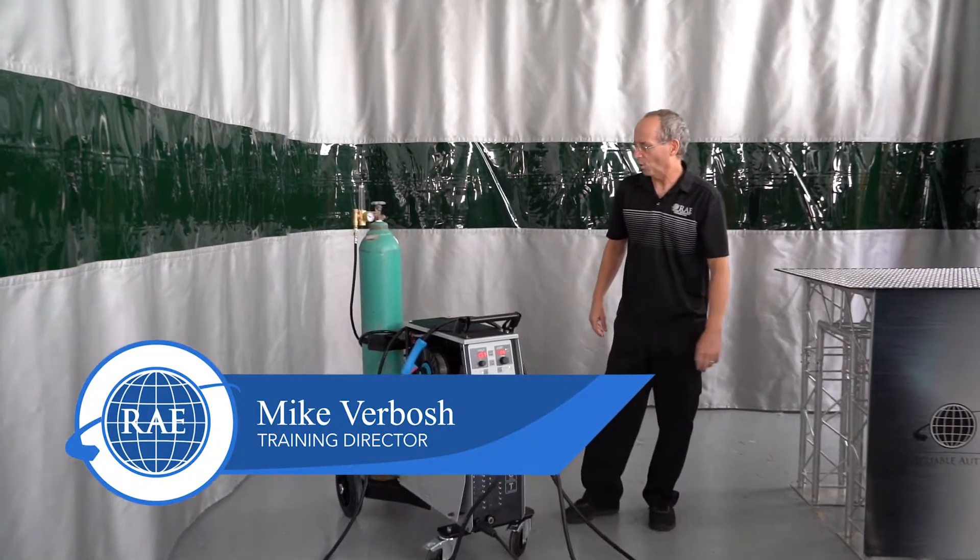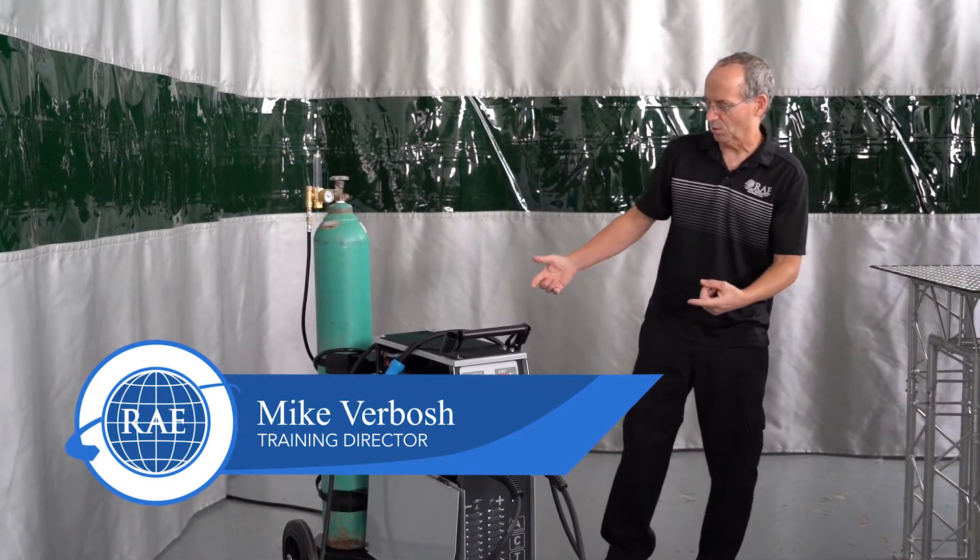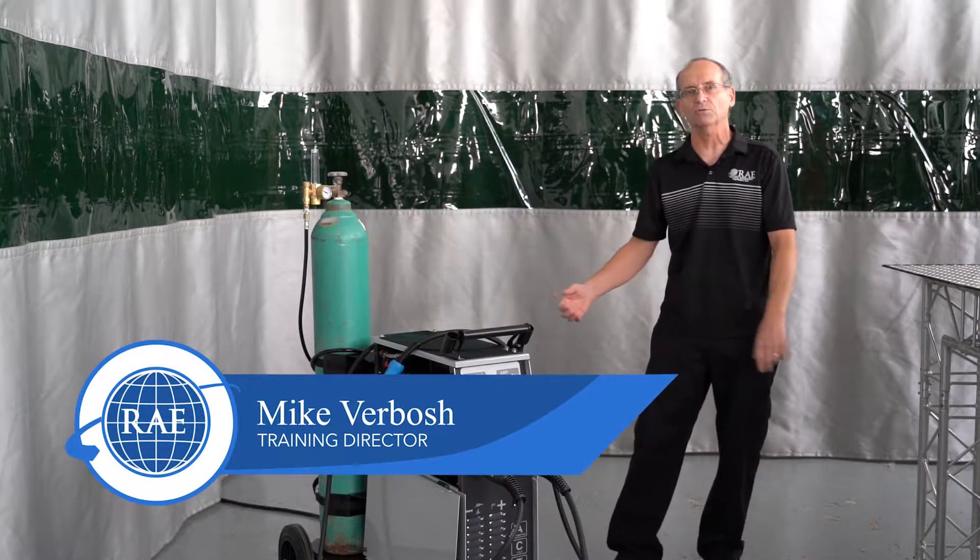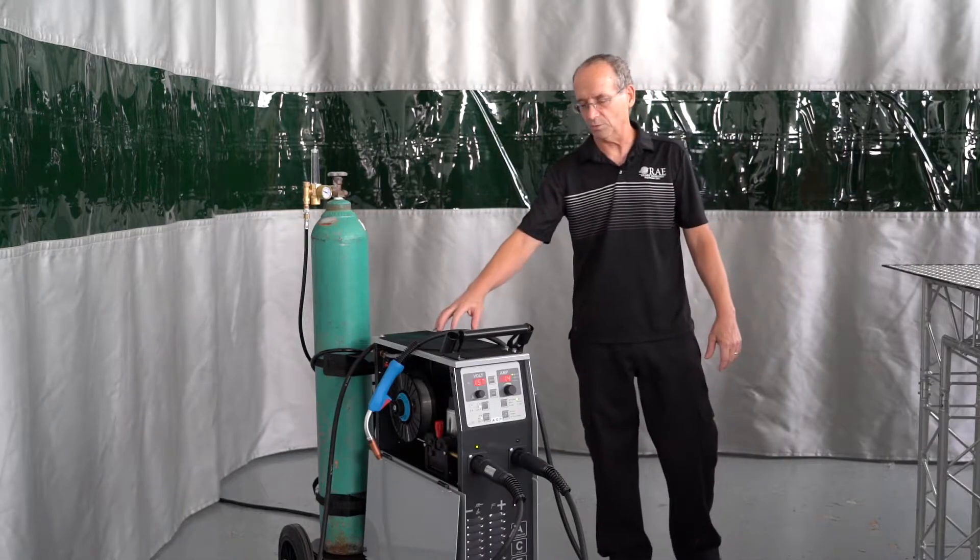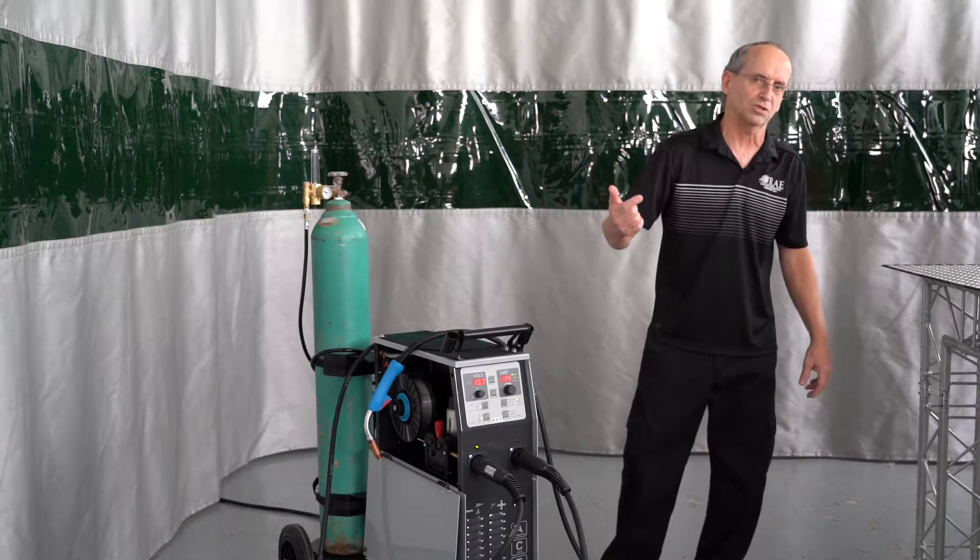Hey guys, Mike V from Reliable Automotive Equipment. Today we're going to be going over the IP7, otherwise known as the VAS 821003. This MIG welder will do aluminum, it'll do MIG brazing, and it'll do steel.